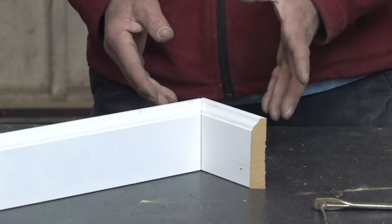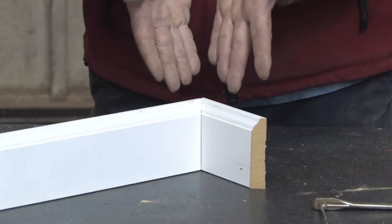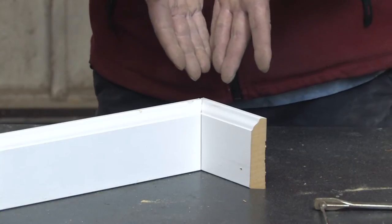Inside coping is a term that describes an alternative to inside 45 cuts made for making the inside corners on molding.